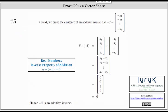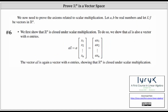Number five: we prove the existence of an additive inverse. We let the opposite of vector x have components equal to the negatives of the components of vector x. Considering the sum of vector x and the opposite of vector x, adding the corresponding elements and simplifying, we get the zero vector. Hence the opposite of vector x is an additive inverse. We've now proven the five axioms of addition.